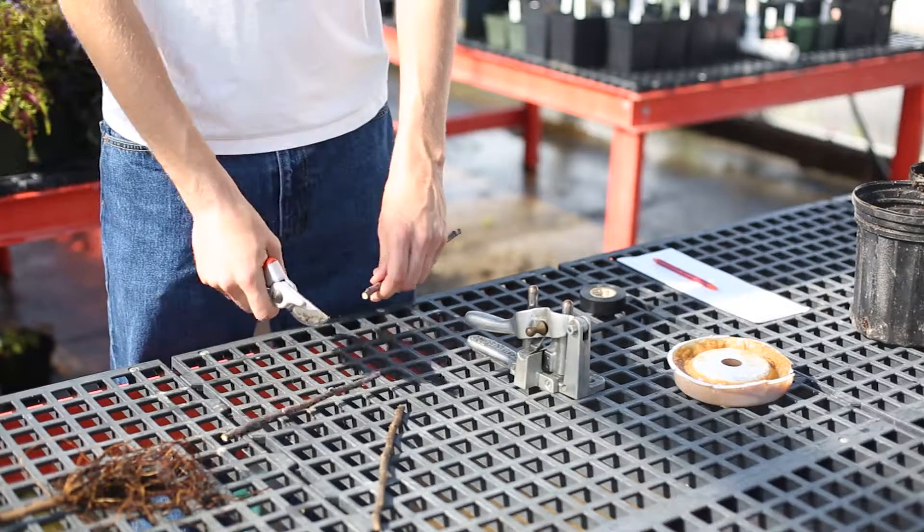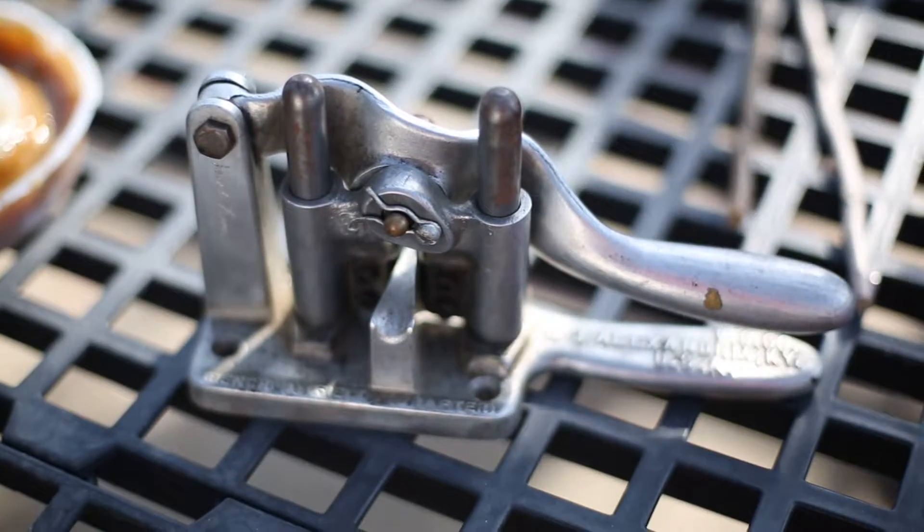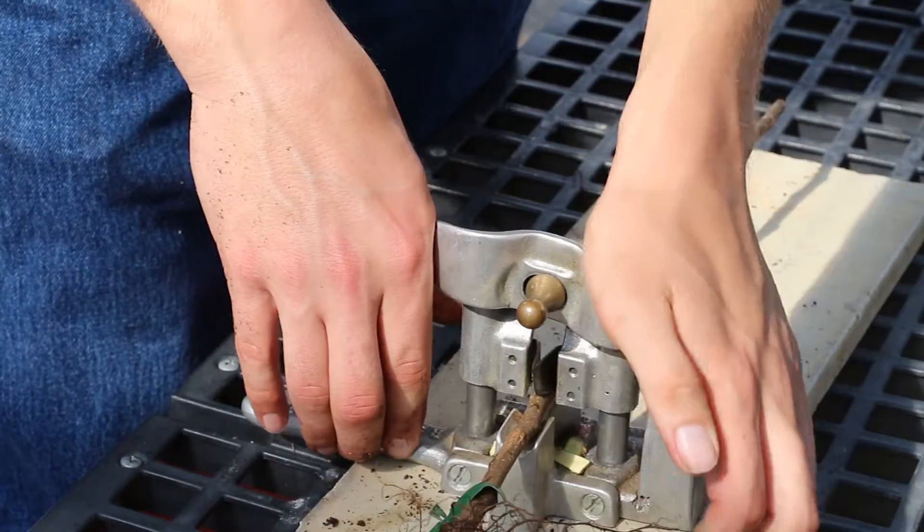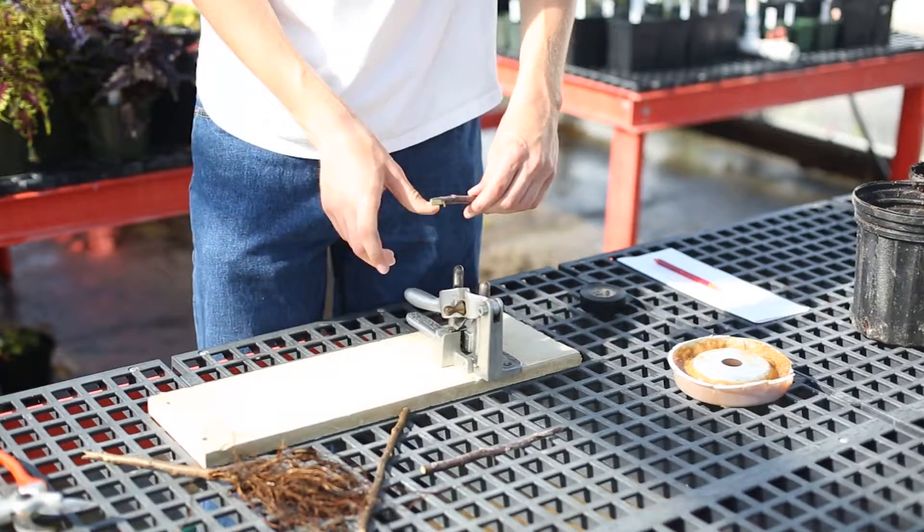Now that we have two that are similarly sized, we can go ahead and make our cut. Your bench grafting tool is going to put an indentation in it so that the scion wood and the rootstock fit together nicely.